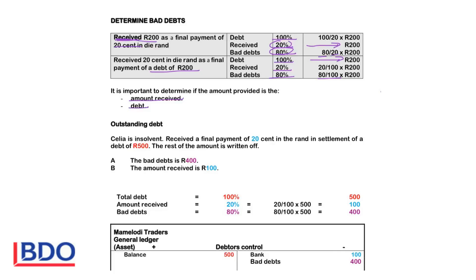Celia's insolvent received a payment of 20 cents in the rand in settlement of a debt of 500. The rest of the amount is written off. The total debt is 100%. The amount received is 20% of the debt. The bad debts is 80% of the debt. The amount given is the total debt, so 100% of the debt equals 500 rand. The amount received will be 20% of 500, which gives 100 rand.